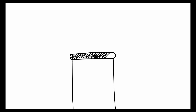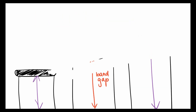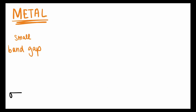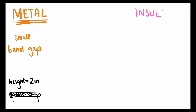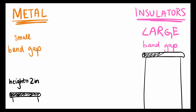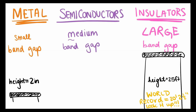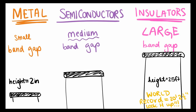Do all materials have the same band gap, or are they different? No, different types of materials have different band gaps. Let's think about a metal — a band gap in a metal is very small, like a 2-inch height bar in our pole vaulting analogy. Insulators, like glass, have very large band gaps — that would be a pole vault height of 21 feet, which is even higher than the world record of about 20 feet 2½ inches. A semiconductor like silicon has a medium band gap — that would be a pole height of about 6 feet or so.